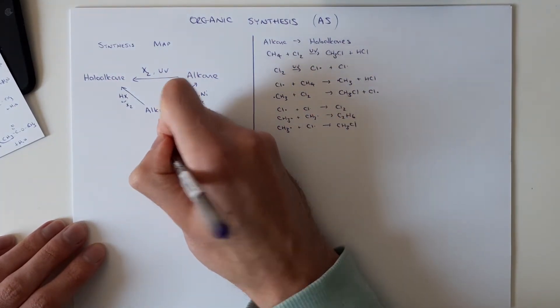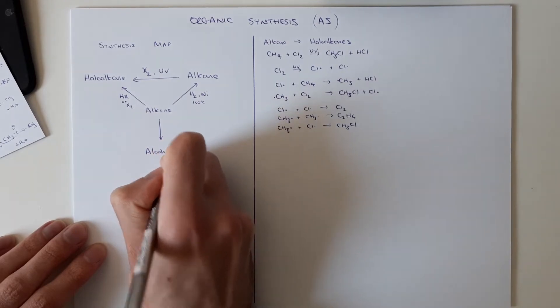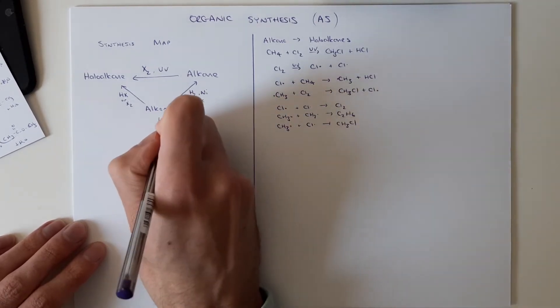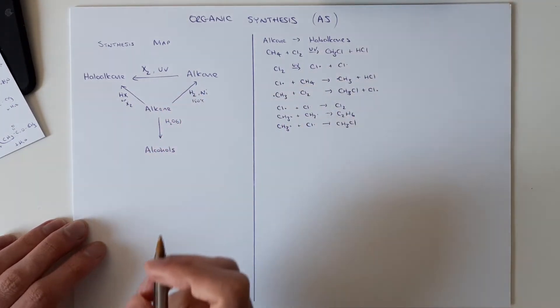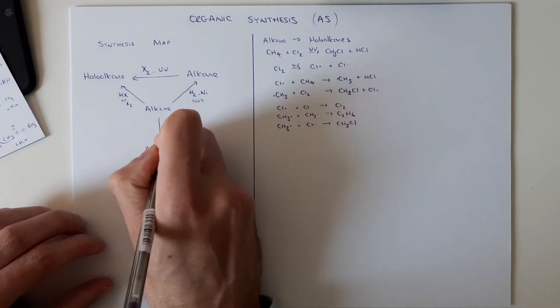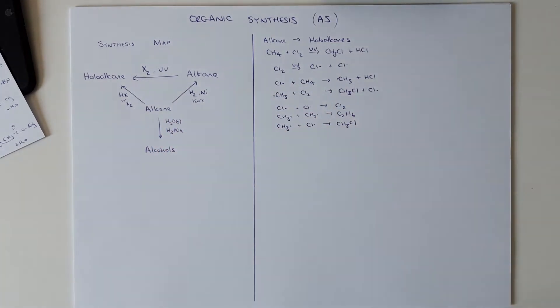And they can go to alcohols. And to go to alcohols we need H2O gas, so steam, and we're going to need a strong acid catalyst like phosphoric acid.